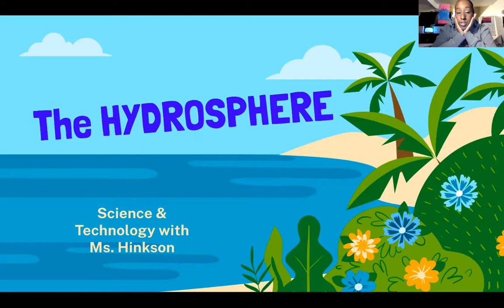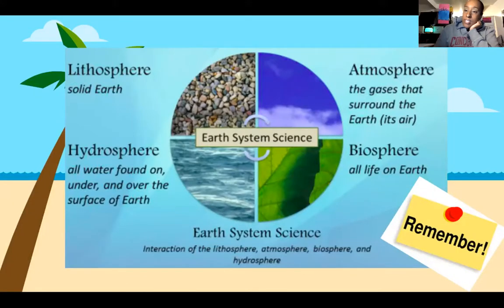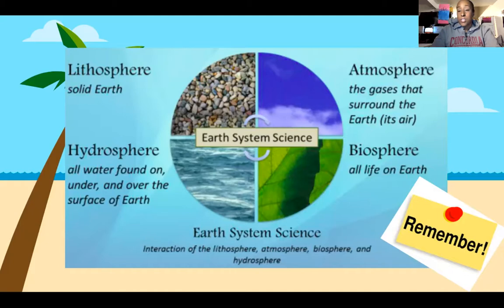So it's only natural that we talk about the hydrosphere next. We're talking about Earth system science and how all these different spheres are involved with one another. The lithosphere is what we were looking at before — that involves the solid Earth. We were talking about the relief, the evolution of the landscape, the rock cycles and all that stuff, and that involved the lithosphere.